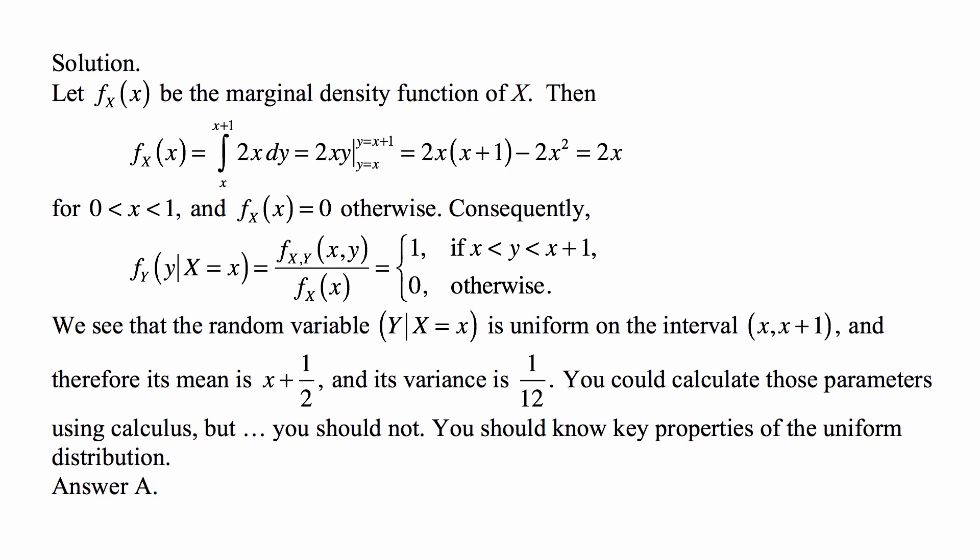the conditional density f sub Y of y given that X is equal to x is the joint density divided by the marginal of x. That's 2x divided by 2x, so it's 1 whenever y is between x and x plus 1 and 0 otherwise.